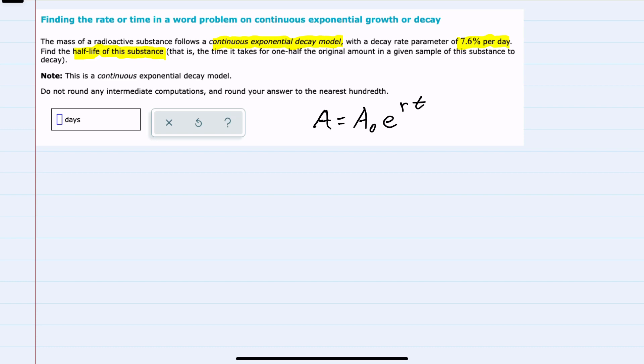I'll start by recalling that for continuous exponential growth and decay our formula is A equals A₀ e to the rt where A is the amount after compounding, A₀ is the initial amount.